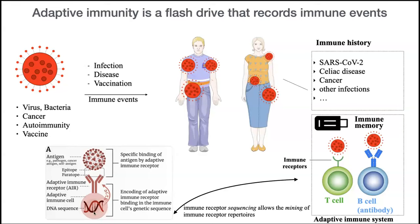We isolate these cells and sequence the RNA or DNA of B and T cells, giving us access to the immune receptor sequence — about 100 amino acids long. Unfortunately, the sequence does not really tell us what antigen it is binding. A major part of my talk is to predict, from the immune receptor sequence, what the cognate antigen is.